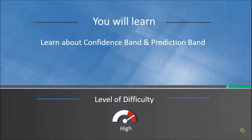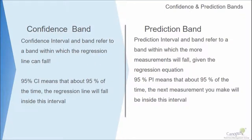In this lecture, we will learn about confidence band and prediction band. Confidence band and confidence interval refer to a band within which the regression line would fall. On the other hand, prediction band is an interval and band within which most of the measurements would fall — that is, most of the measurements derived from the regression equation would fall based on the model.